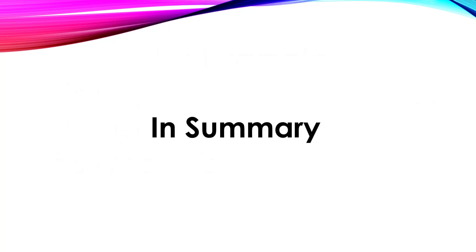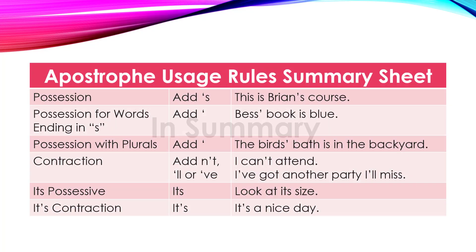In summary, these rules are really not as complicated as you would think. For simple possession, add apostrophe S — this is Brian's course. Possession with words ending in S, just add an apostrophe — Bess' book is blue. Possession with plurals is kind of the same, because most plurals end in S — the birds' bath is in the backyard, that's many birds, birds plural. Possession uses the apostrophe.